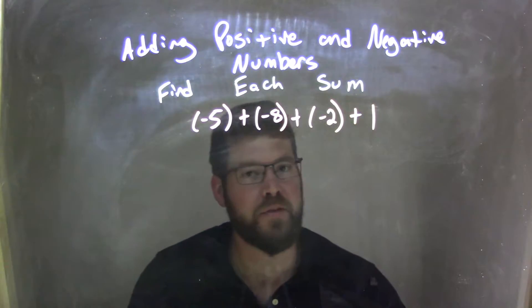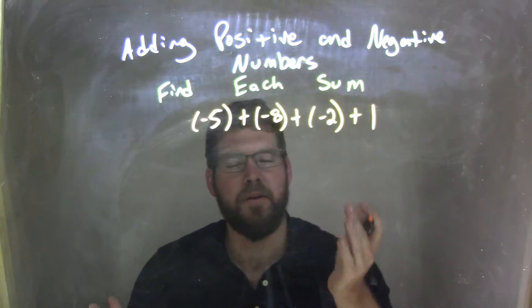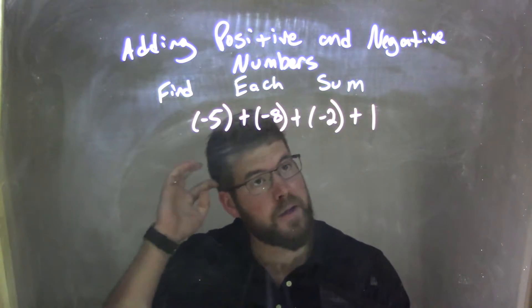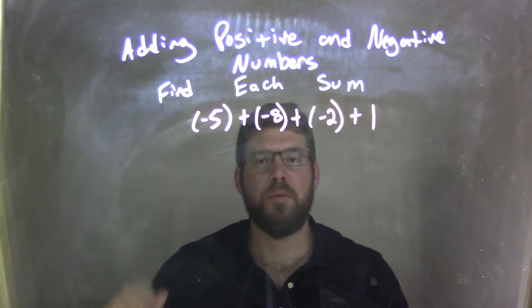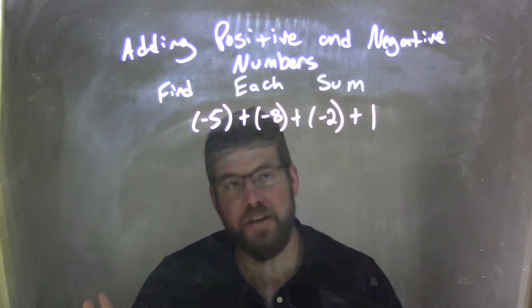So if we're given negative 5 plus negative 8 plus negative 2 plus 1, since they're all addition here, it really doesn't matter which one we do first necessarily. What I want to deal with is finding ones that kind of match up, that are numbers that are easy to add to.